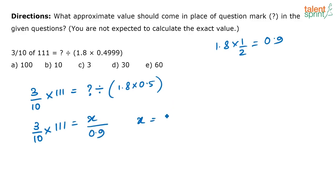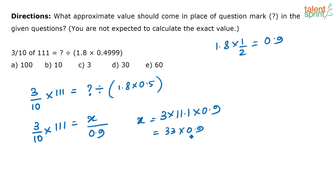You have to find 3 into 111 by 10, which is 11.1, into 0.9. So you need 3 into 11.1 — here you are approximating, so 3 into 11 is 33. Then 33 into 0.9 is approximately close to 27 or 28, so you can take it as 30. That is the closest option available. You can approximate this and take it as 30. Option C.